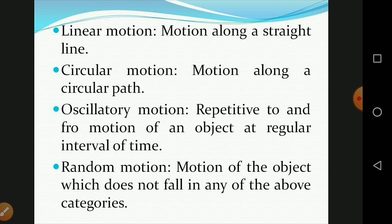Random motion is the motion of an object that does not fall into any of the above categories — it cannot be classified as linear, circular, or oscillatory. The object moves anywhere and everywhere without a fixed pattern. For example, dust particles in sunlight traveling through a window move randomly, which is called random motion.